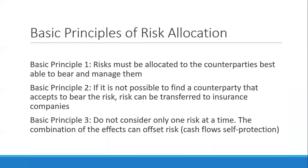The first basic principle of risk allocation is that risks must be allocated to the counterparties best able to bear and manage them. The SPV might not be the best party to manage a risk, and because it lacks the knowledge or expertise, the impact of that risk may be magnified. The best approach is to allocate those risks through agreements to a counterparty and let them handle the risk.